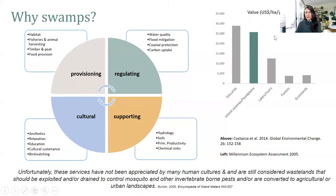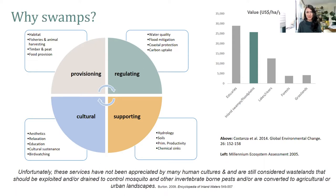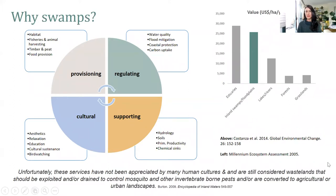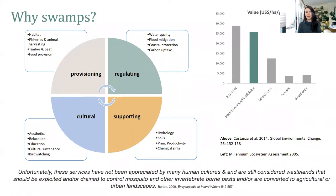Before I jump into the specifics of Sydney swamplands, I wanted to contextualise why swamps are actually important to study. Looking at this plot on the right-hand side of the screen, you'll note that swamps and estuaries have significantly higher value in dollars per hectare per year than other landscapes we might conventionally consider high value, such as forests, lakes and rivers. This is largely because of their role in improving water quality, flood mitigation, and a range of other ecosystem services. Despite this, human cultures worldwide still too often consider swamplands to be wastelands that should be drained, and they're commonly converted to agricultural or urban landscapes.